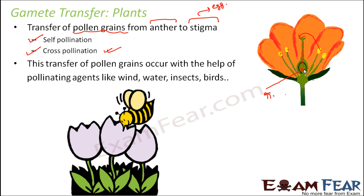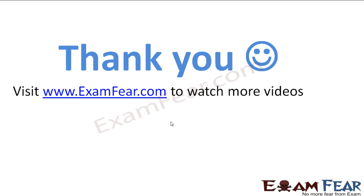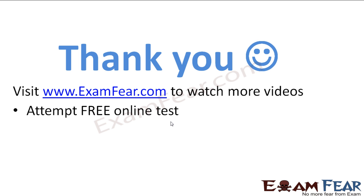Insects are one of the most common pollinating agents. You would have seen insects hovering over flowers — they are attracted by the colors and the smell of the flowers. When they come near the flowers, they carry the pollen grains from one flower to another.